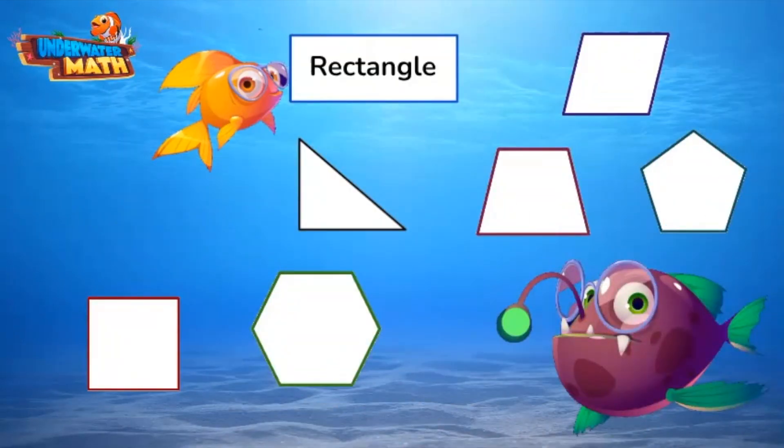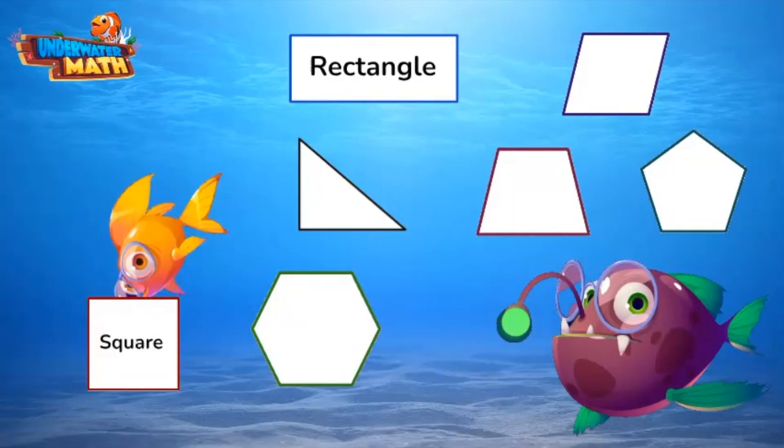This is my friend Goldie. She is looking for rectangular shapes only. She found the rectangle and the square. Both of these shapes are classified as rectangles because they have two sets of parallel lines and four right angles.